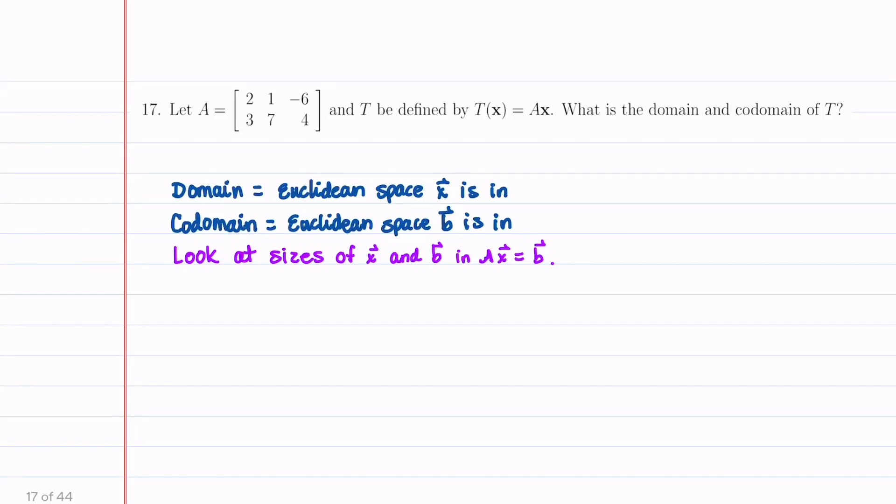Welcome to Understand the Math. In this question, we're given a matrix A and a transformation T defined by T of X is equal to A times X. The question we're asked is what is the domain and codomain of our transformation T?